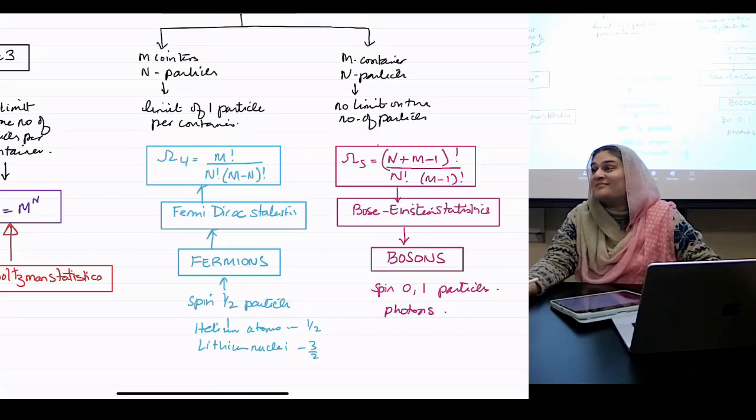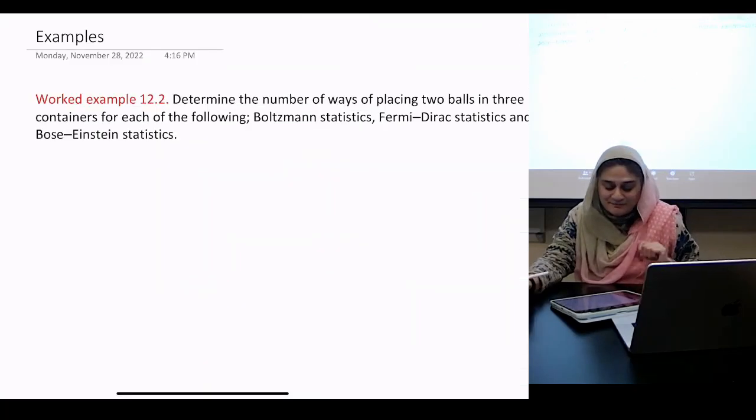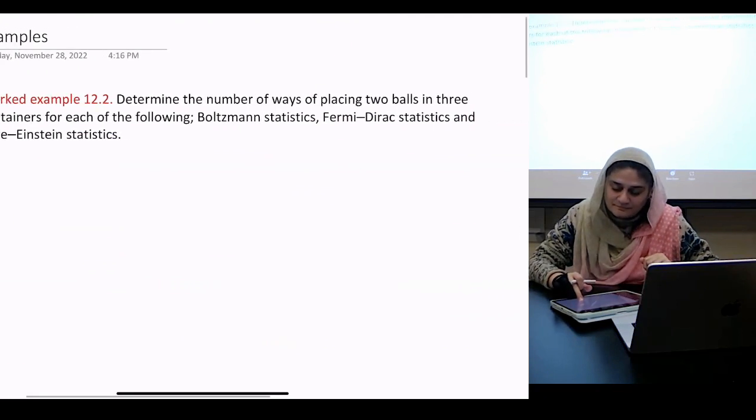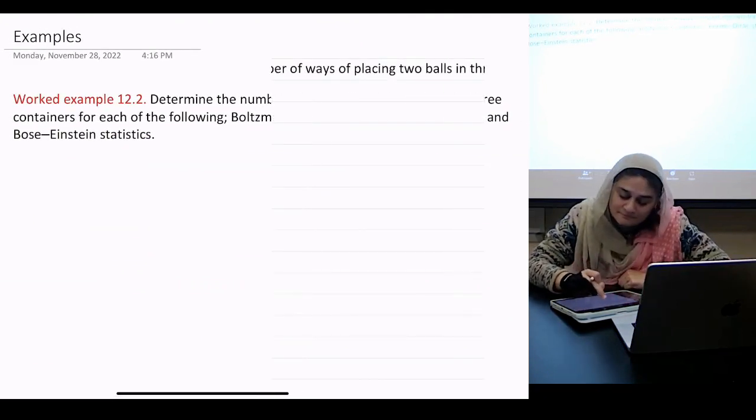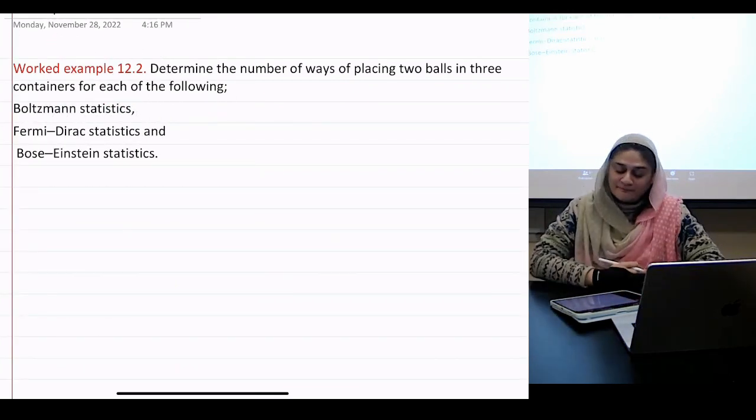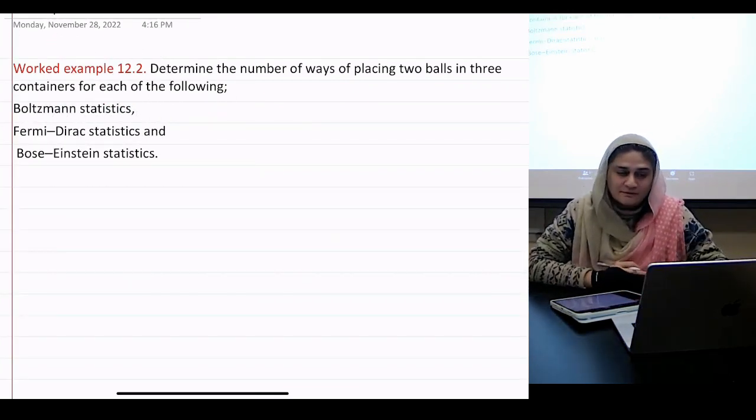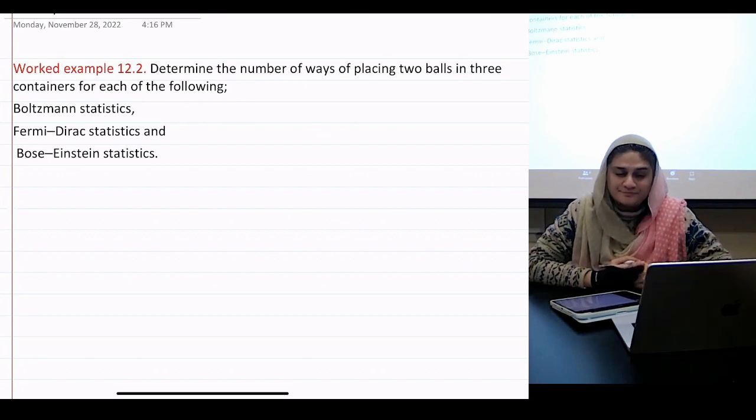Ready to do an example? Determine the number of ways of placing two balls in three containers for each of the following: Boltzmann, Fermi-Dirac, and Bose-Einstein statistics.